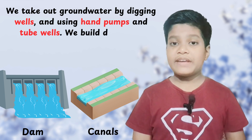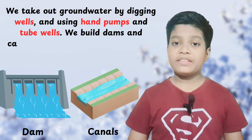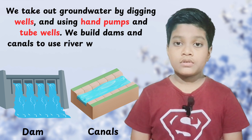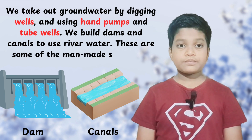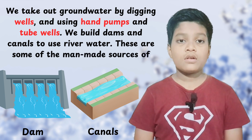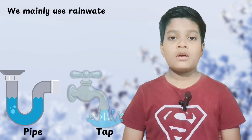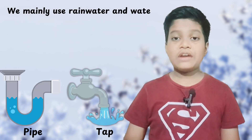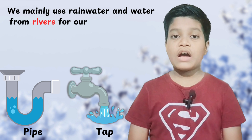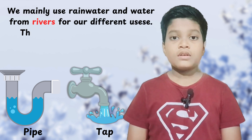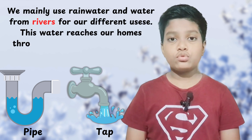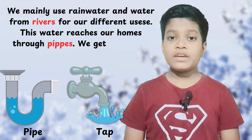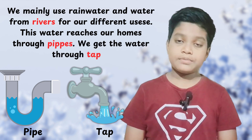We build dams and canals to use river water. These are the man-made sources of water. We mainly use rainwater and water from rivers for our different uses. This water reaches our homes through pipes, and we get the water through taps.